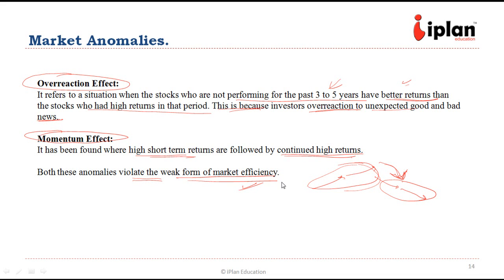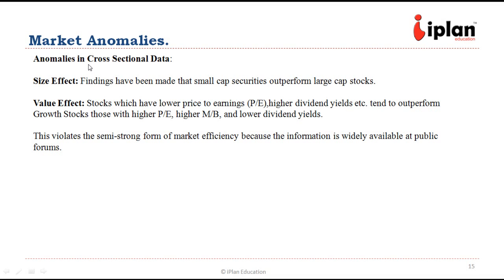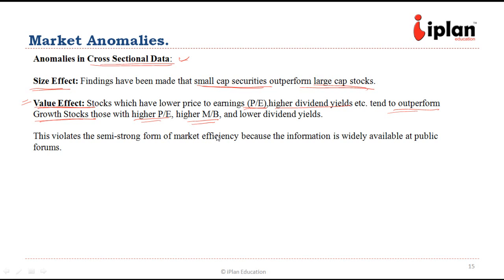Cross-sectional anomalies include the size effect — small-cap securities have been found to outperform large-cap stocks on a risk-adjusted basis. There is also the value effect — stocks with low ratios such as low price-to-earnings or high dividend yields tend to outperform growth stocks with higher P/E or higher market-to-book values. These two factors violate the semi-strong form of market efficiency, since fundamental analysis can help generate returns in these cases even though the information is widely publicly available.